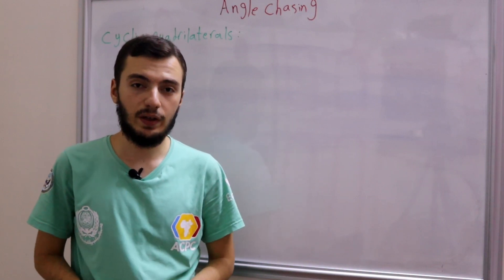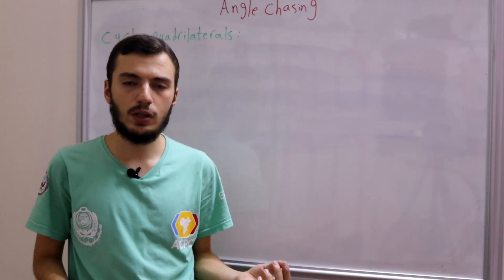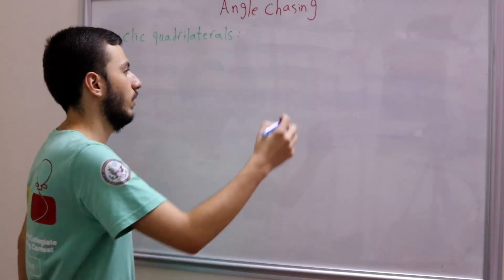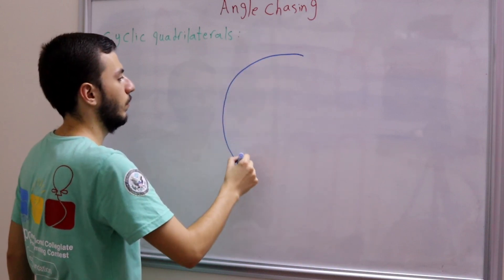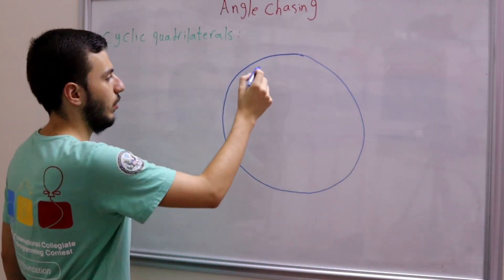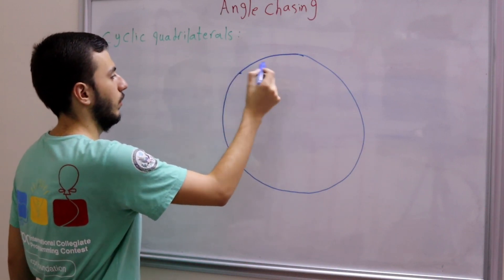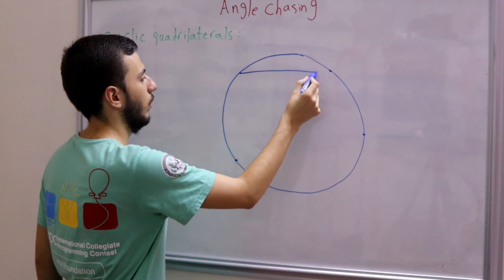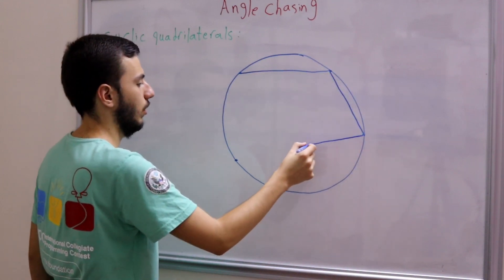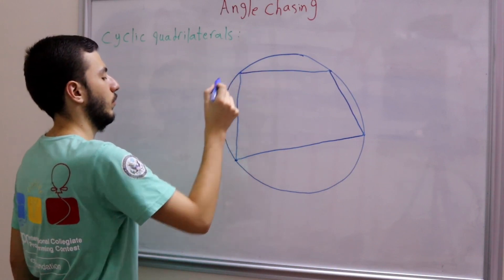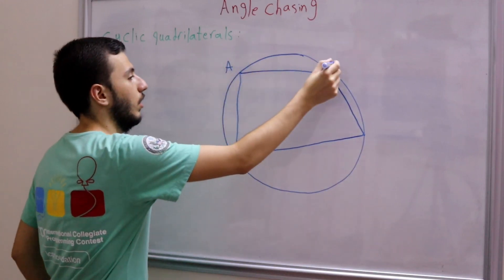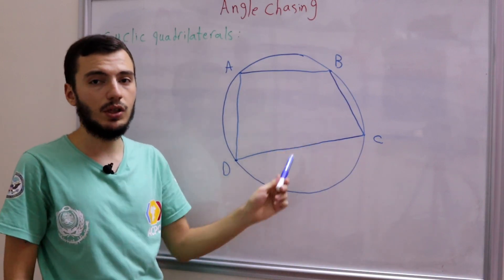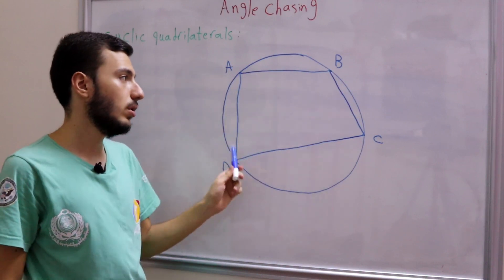So basically, what's the definition of a cyclic quadrilateral? Well, it is any quadrilateral — for example ABCD — that has a circle passing through its four points. So let's say we have a circle here, and we have four points on it, and we draw the quadrilateral ABCD. We call this quadrilateral ABCD cyclic because clearly its four points lie on some circle.